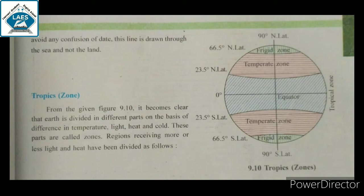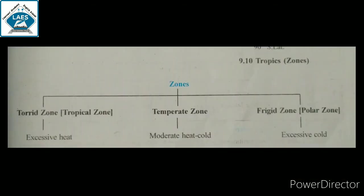Next topic: Zones. From the given figure it becomes clear that the earth is divided into different parts on the basis of differences in temperature, light, heat, and cold. These parts are called zones. The earth has been divided into three zones: torrid zone, temperate zone, and freezing zone.